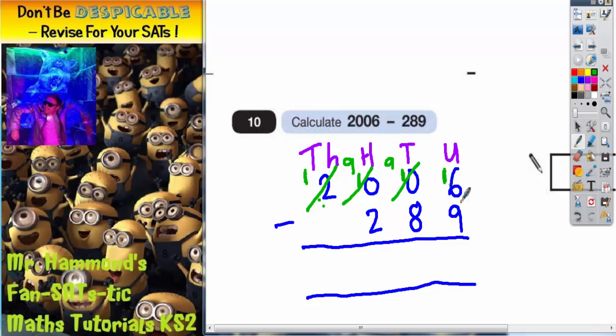Sixteen take away nine is seven, nine take away eight is one, nine take away two is seven, and one take away nothing is one. So the final answer should be one thousand seven hundred and seventeen.